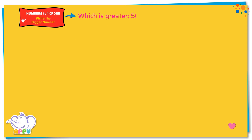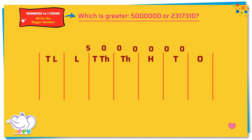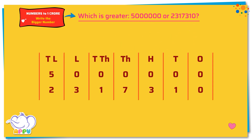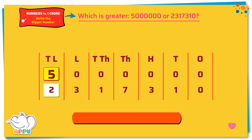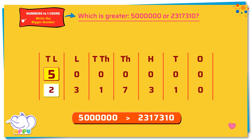Write the bigger number. Which is greater? 50 lakhs or 23 lakhs 17,310. To find the greater number, we first compare the number in the 10 lakhs place. Here, we compare 5 and 2. Since 5 is greater than 2, 50 lakhs is greater than 23 lakhs 17,310. Marvelous!